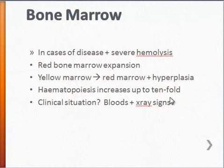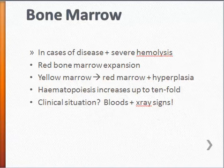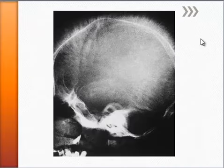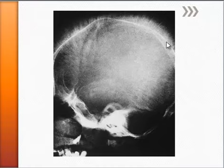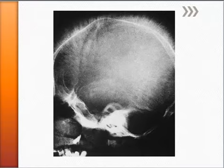You also have x-ray signs to figure out if there is bone marrow expansion and extra hematopoiesis going on. A very common radiological sign is what's called the hair-on-end appearance. It's commonly described on skull radiographs and is the appearance of long, thin vertical striations that look like hair standing on end. To understand why you get this appearance, we'll have to look a little bit further at the actual structure of bone.